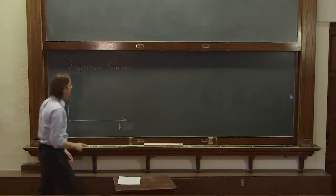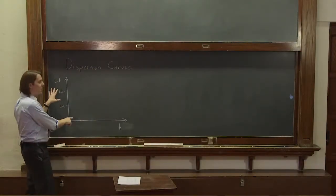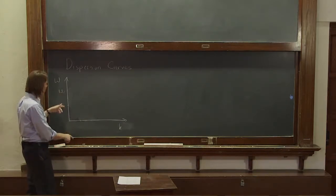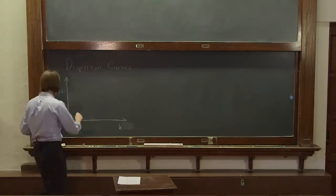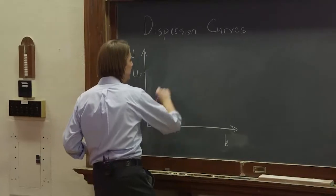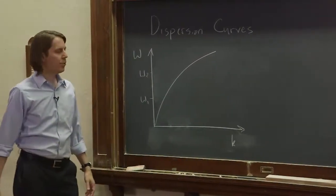Now let's consider a dispersive medium. So here is the omega versus k plot. Omega 1, omega 2 will leave in the same place. But now I'll give it a curve dispersion like that.